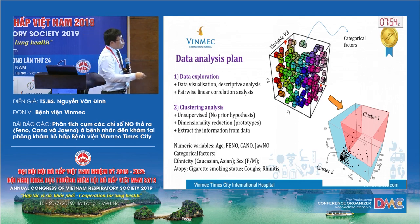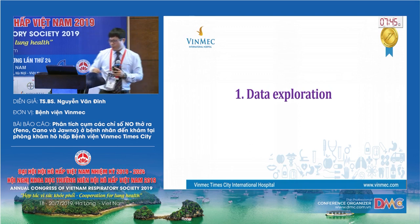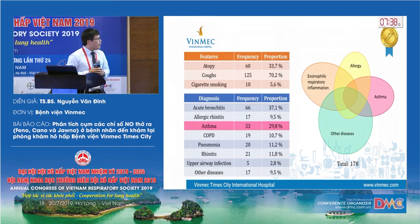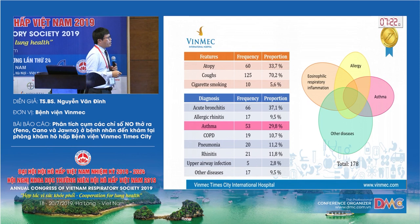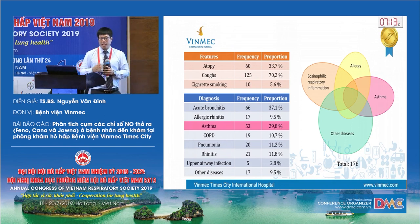You can see here the clusters. For the data exploration — thanks to the expert statistician and Professor Tuan — we have very beautiful data. We have all the patients with a list of clusters. With atopy, we have 60 patients, and we have 125 patients with a cough, and only 10 patients with cigarette smoking. This is one limitation of the study because sometimes we missed taking the history of the smoking habit from the patient.